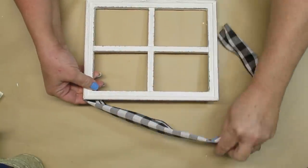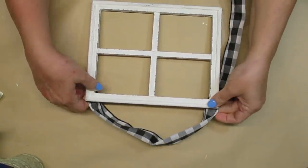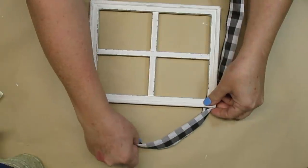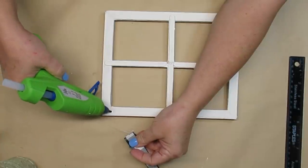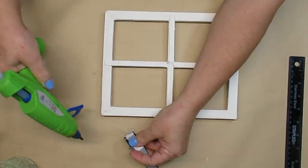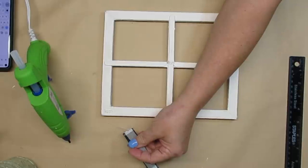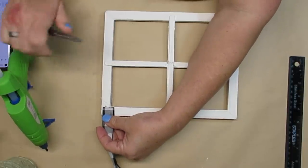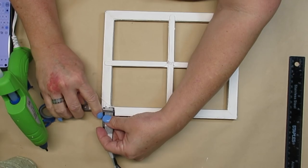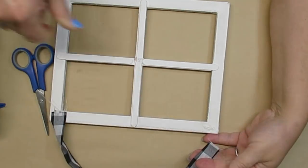To hang this little window, you could use whatever you wanted you could put a sawtooth hanger on the back. I decided just to take some more of my buffalo check ribbon I folded it in half this time and I'm just going to hot glue it onto the back of the frame making sure that my loop isn't too long and making sure that it folds over nicely when I glue it onto the other side.